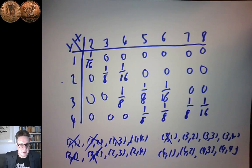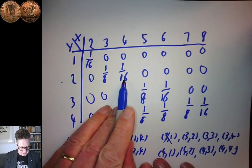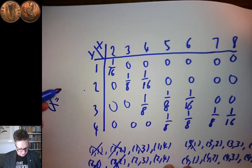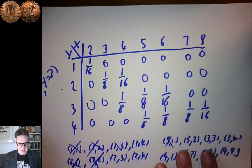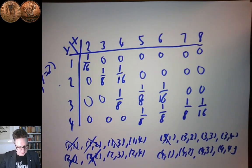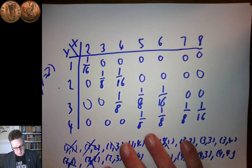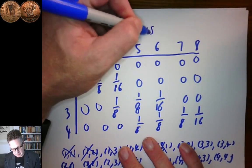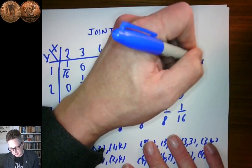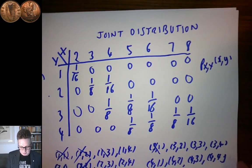That distribution tells us the probability of getting particular pairs of values. For example, there's a 1/16 chance of getting X=4 and Y=2. These entries are the probabilities of getting particular pairs of values of the two random variables defined on the same outcome space. This is what we call the joint distribution, and we can write it as P_XY.